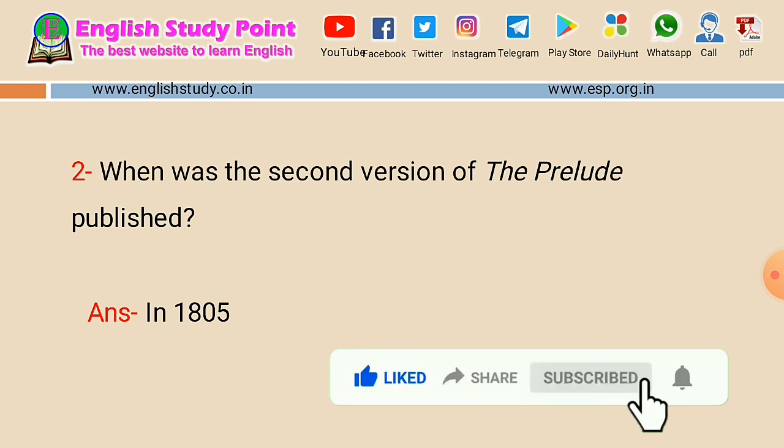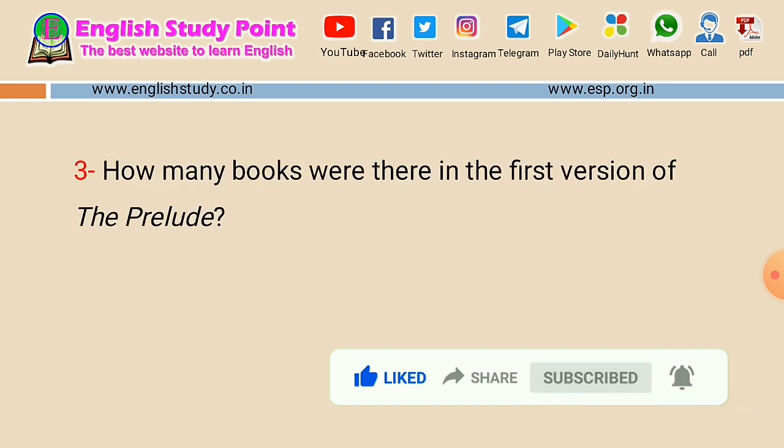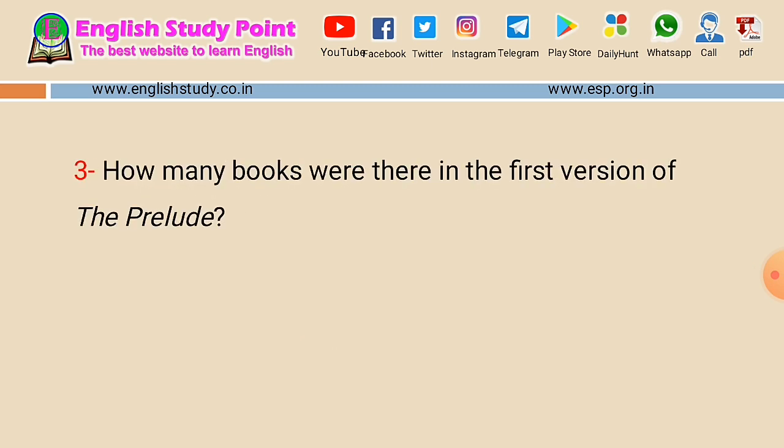Question number three: how many books were there in the first version of the Prelude? The first version was published in 1799. The answer is two books — there were two books in the first version of the Prelude.